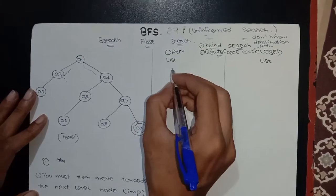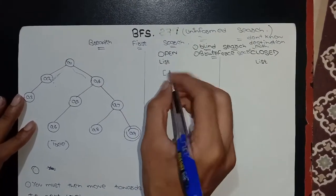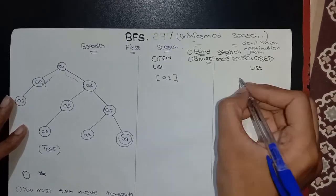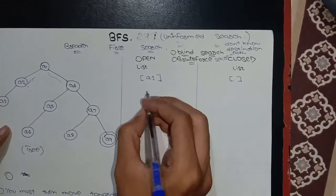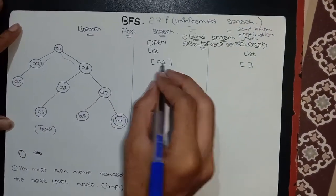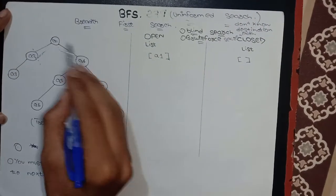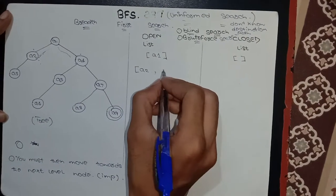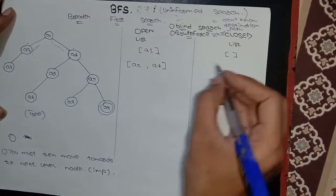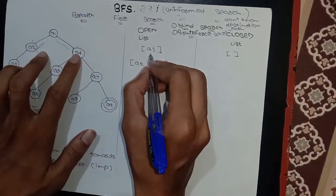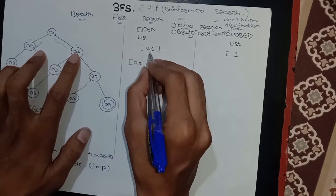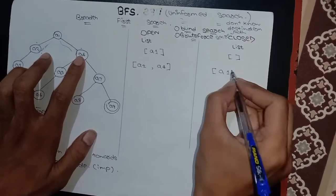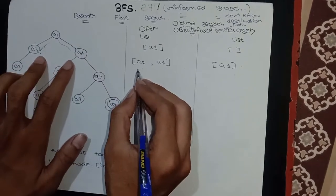Now let's go for practical implementation. We have an open list and a close list. First, I create a list in which I put A1, which is our starting node. In the close list I will keep this list empty initially. Then I consider A1's further child nodes, which are A2 and A4. Then I will put A1 into the close list because I have traversed or explored A1.